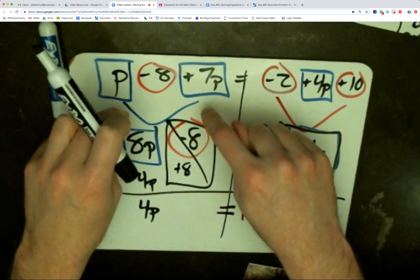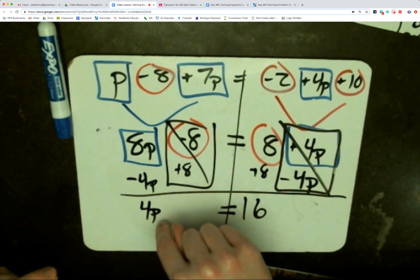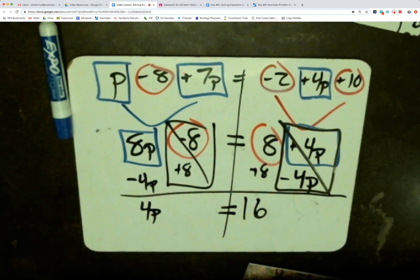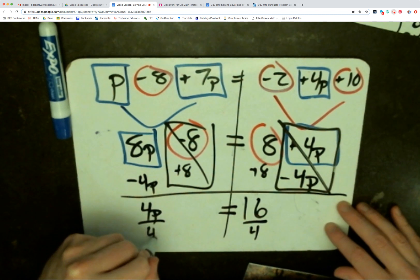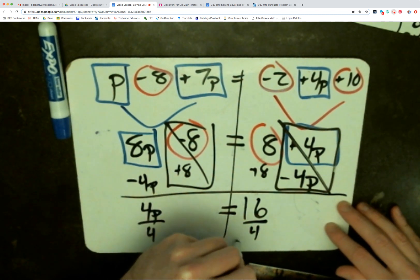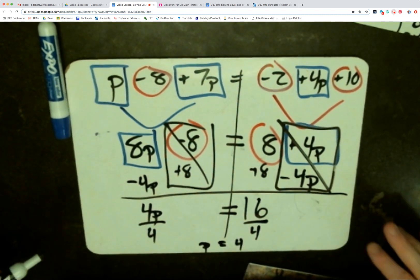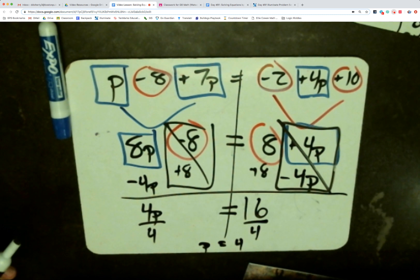Now we see the equation. All the variable terms have been gathered here on the left. All of the constant terms now gathered on the right. Last step you should be comfortable with. We're dividing both sides by 4. p is equal to 4. So we have two answers now. p is equal to 4.